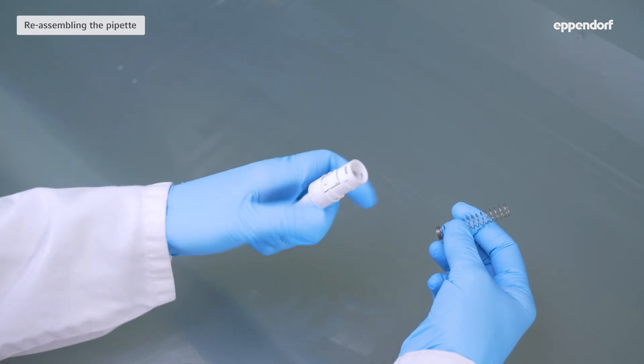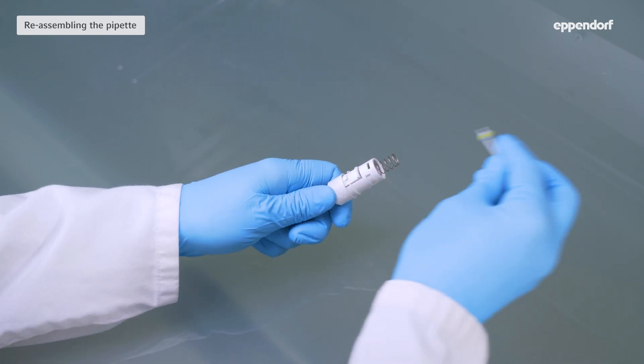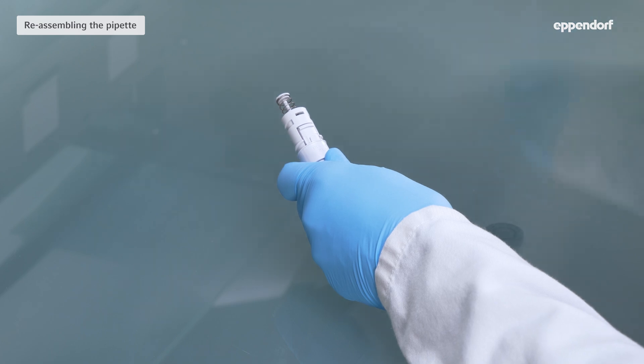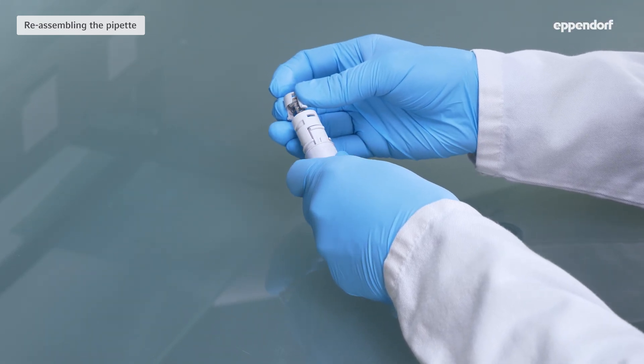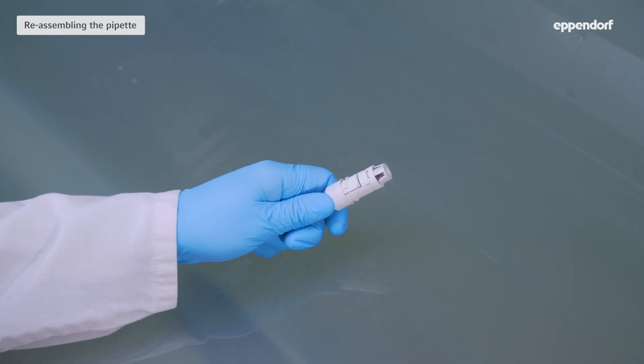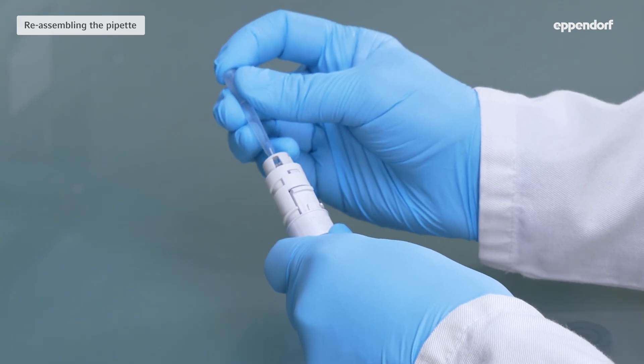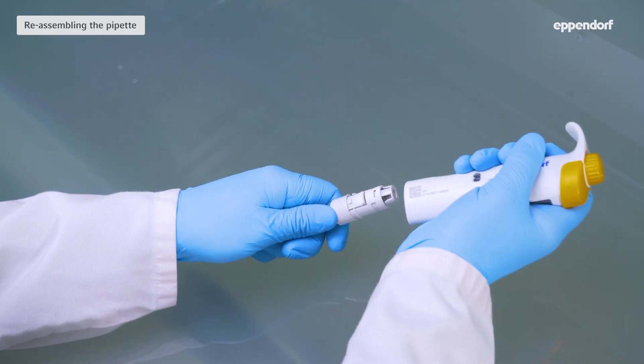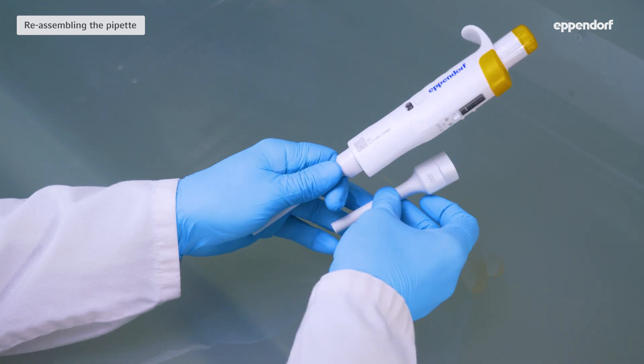Carefully insert the piston with spring into the cylinder. Gently squeeze the piston mount and fit the stop pins in their retainers. Ensure the piston moves freely. Use a pipette tip to press down the piston from above. Insert the lower part into the upper part until you hear it engage. And attach the ejector sleeve.